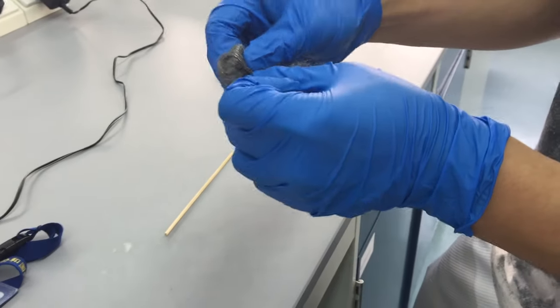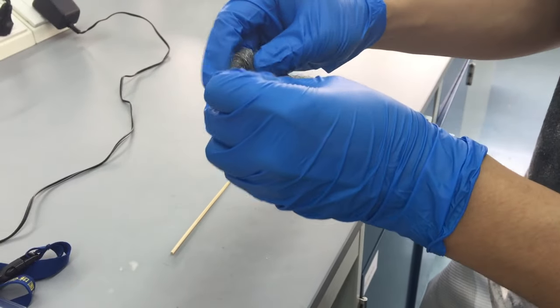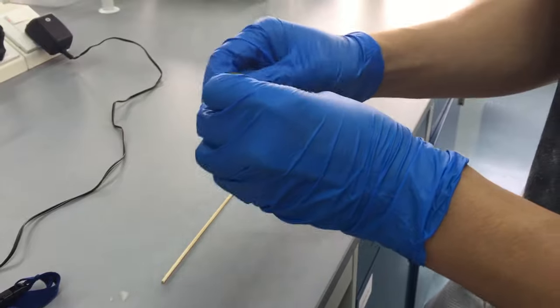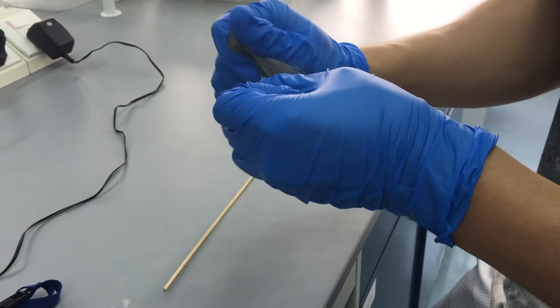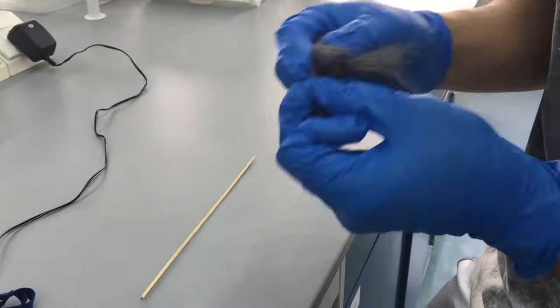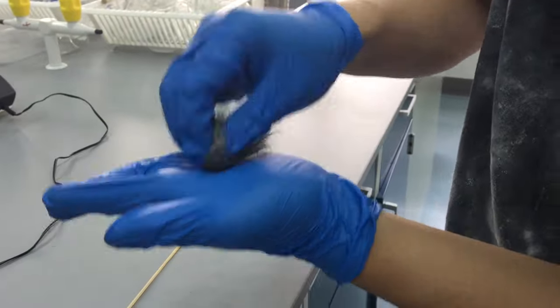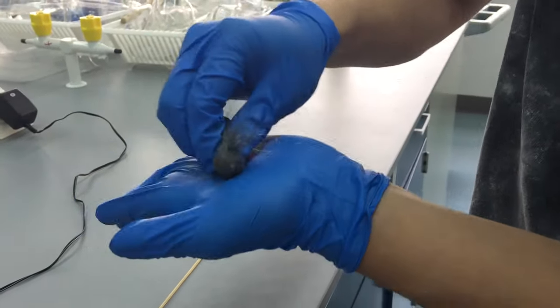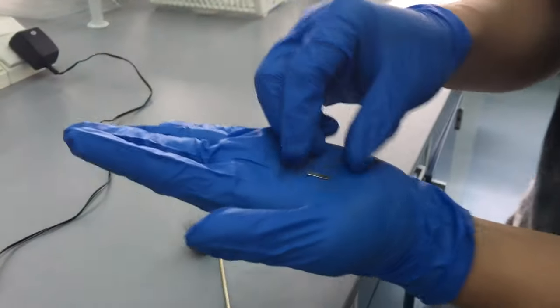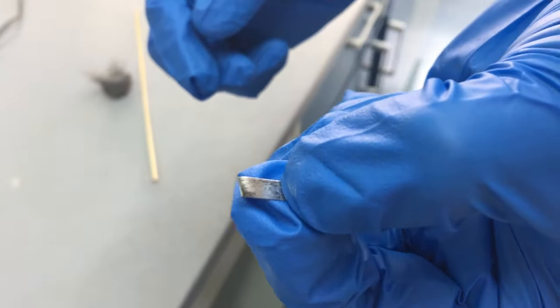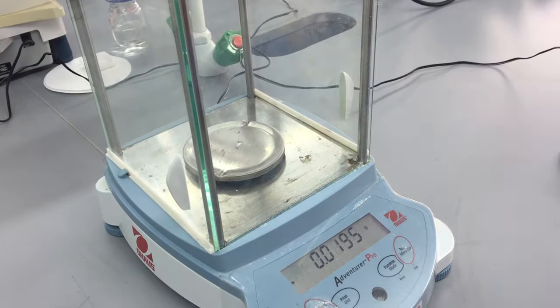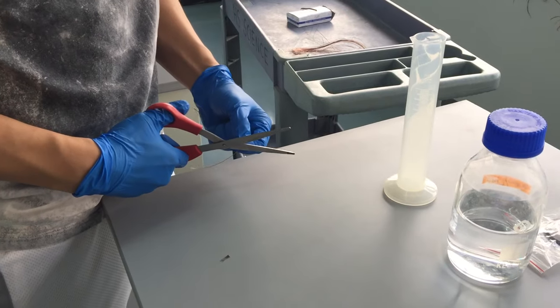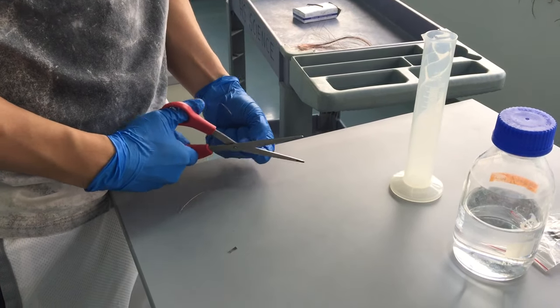First, sand a magnesium ribbon to get rid of the magnesium oxide layer so that the magnesium can react with hydrochloric acid. Then weigh the magnesium ribbon and cut a piece of copper wire.